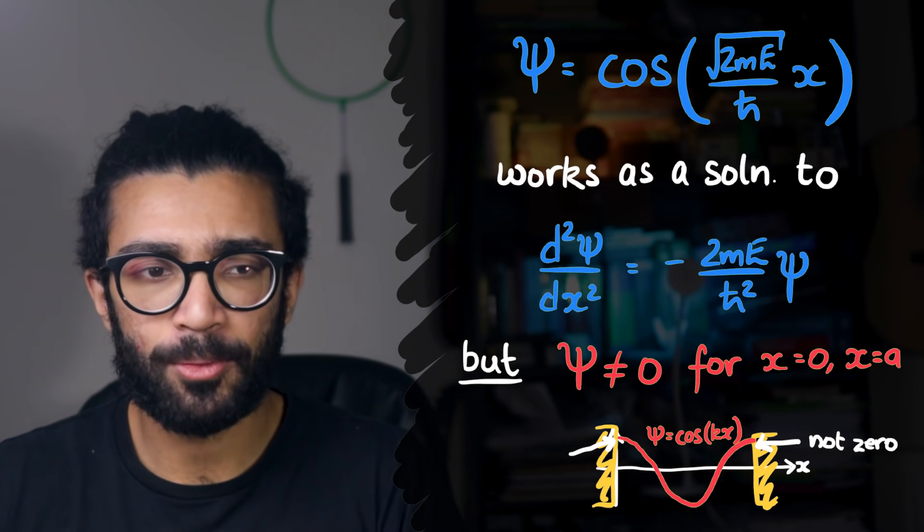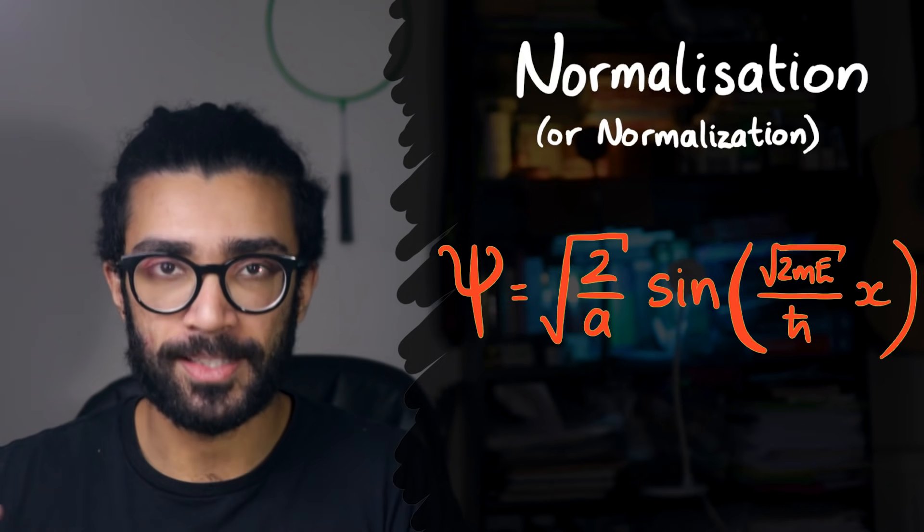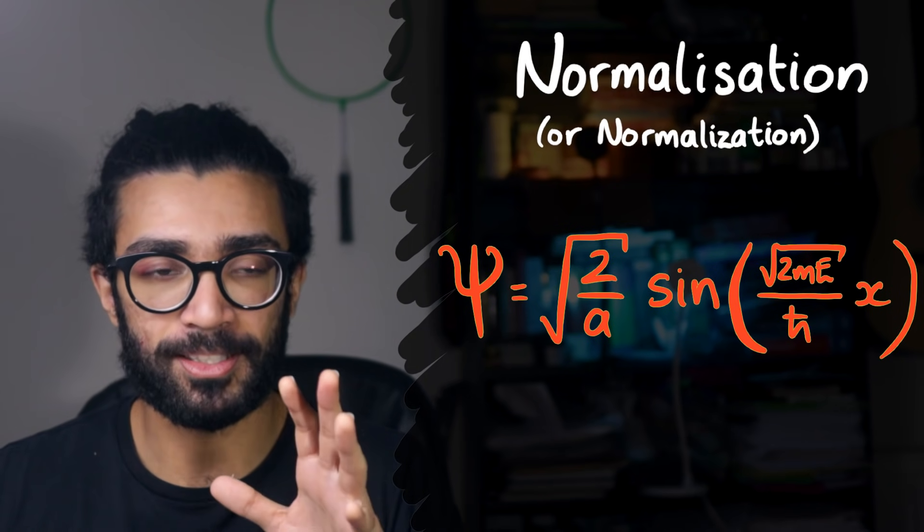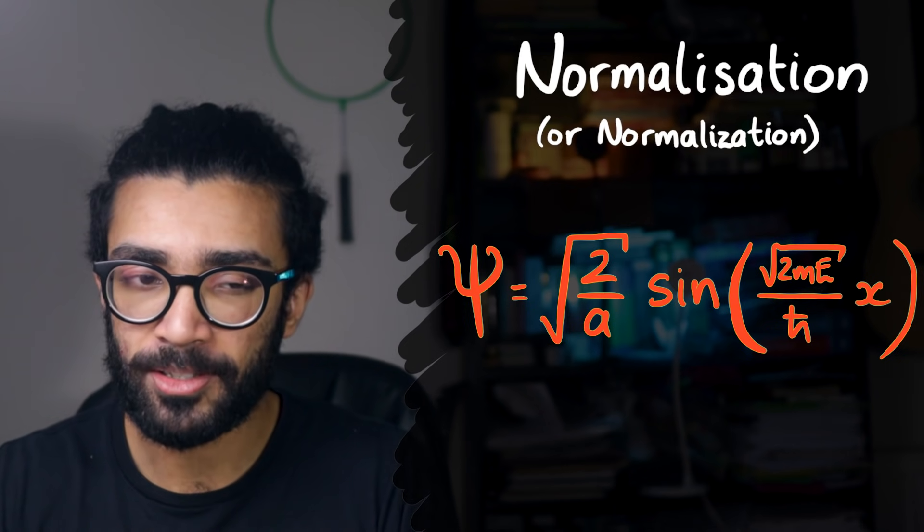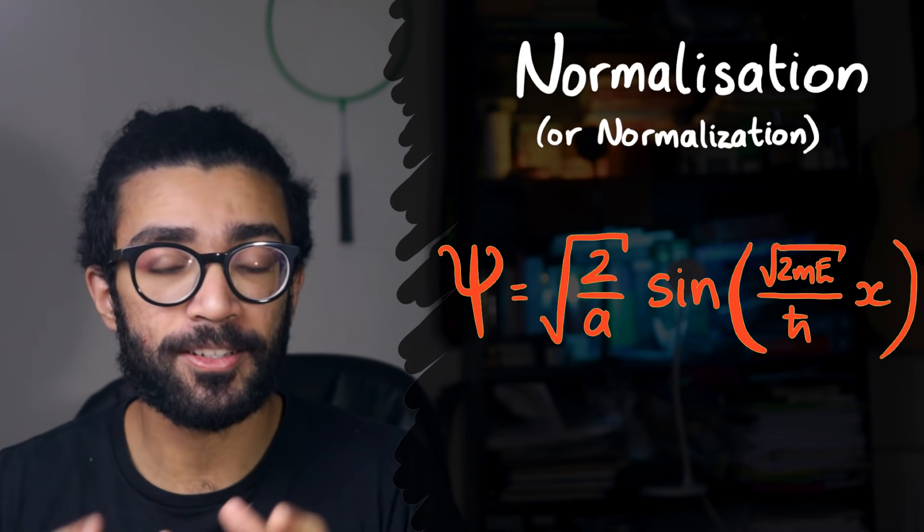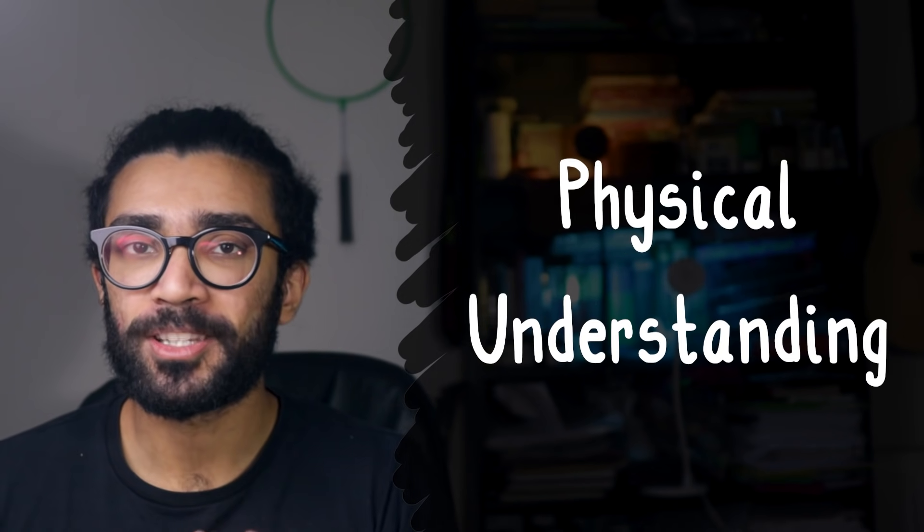Now, as it turns out, there's one more thing that we need to consider when finding the solution to this Schrödinger equation, which is known as normalization. I want to discuss this in a separate video, because it's a really interesting concept that we can go into a lot of detail about. But the crux of the matter is that in this particular case, it adds a factor of square root of 2 over a to our solution.